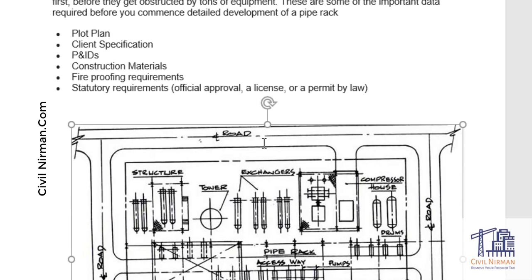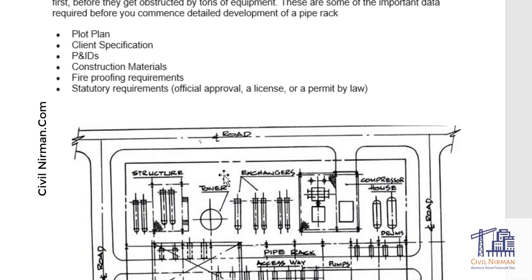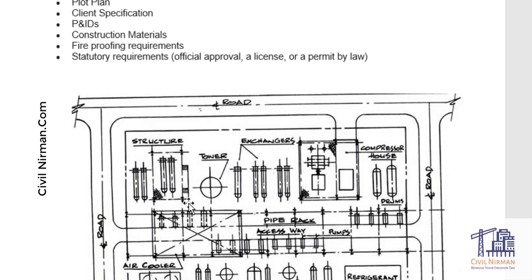There are also interconnecting pipe racks. Between two structures, an intermediate pipe rack will be provided, which will be a normal one with two or three tiers and some five or six portal bays, which won't be that complicated. This intermediate pipe rack sponsors the pipe on both structures. Those are called interconnecting pipe racks.